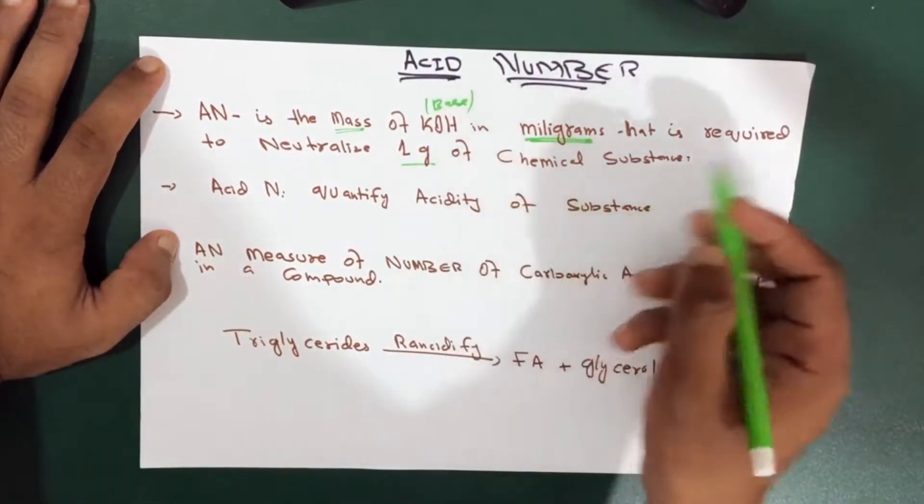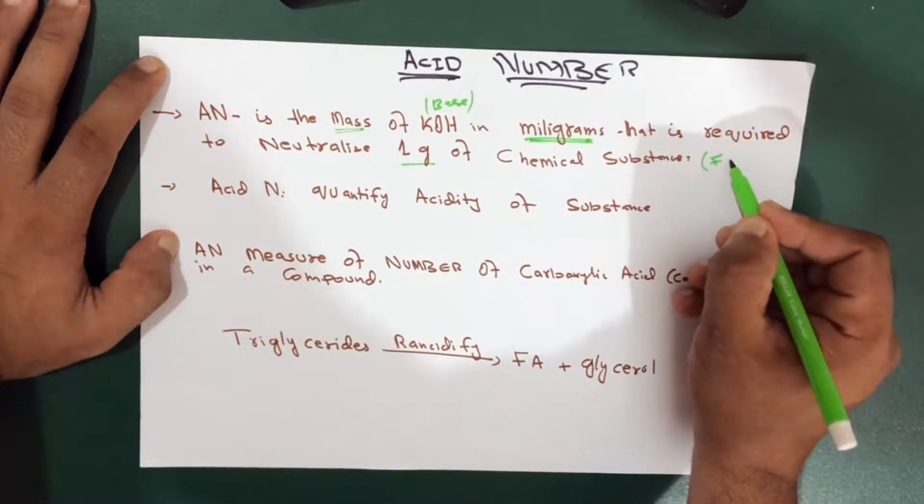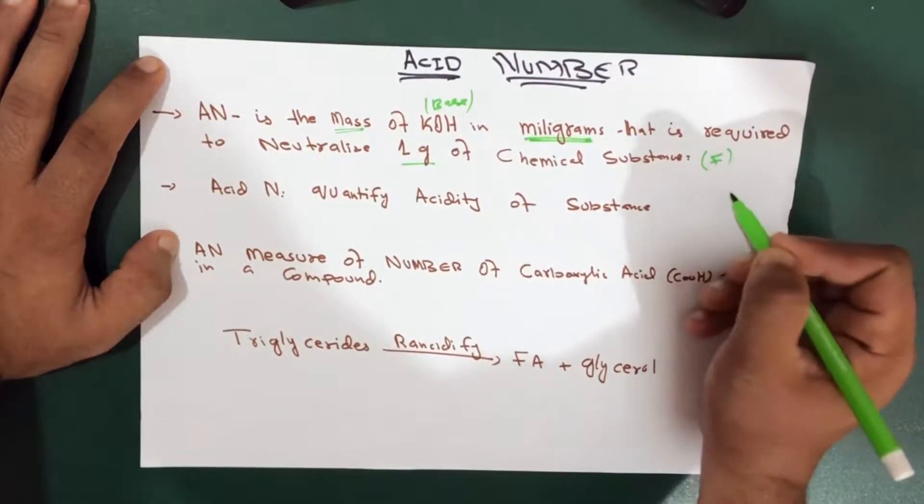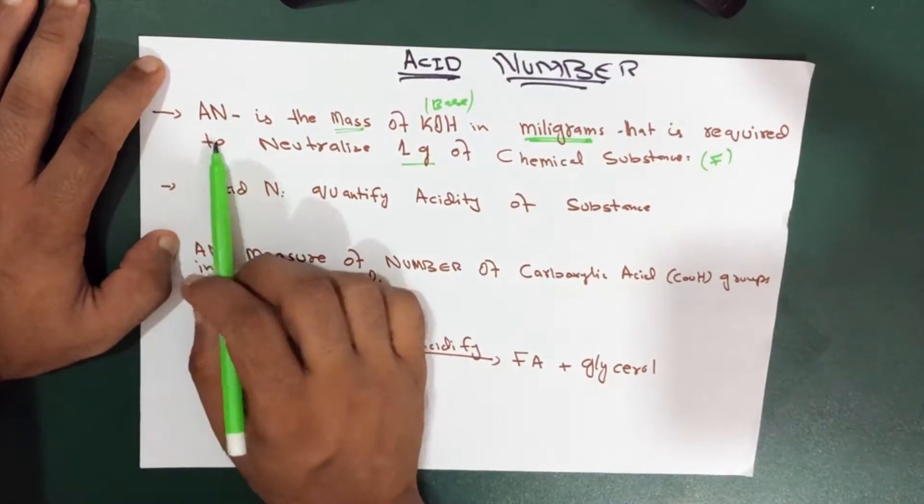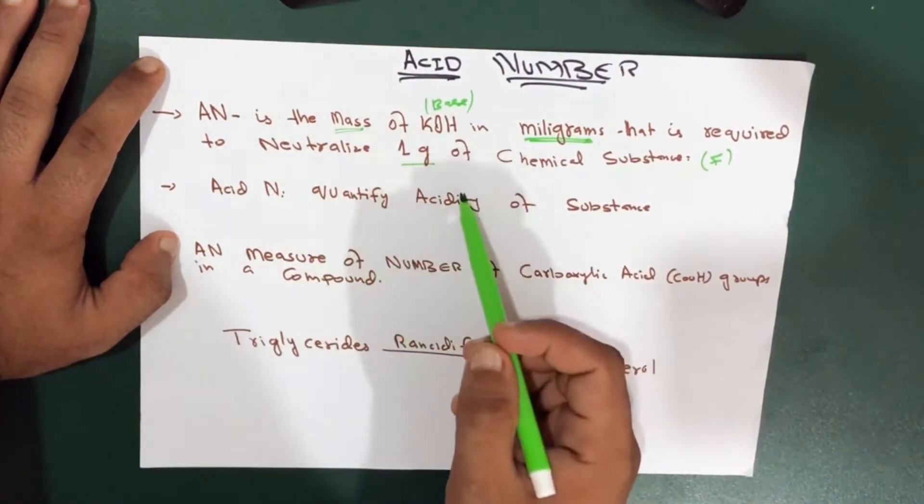So in case of this one we take fatty fats. Alright, so acid number is the mass of potassium hydroxide that is required to neutralize one gram of fats.